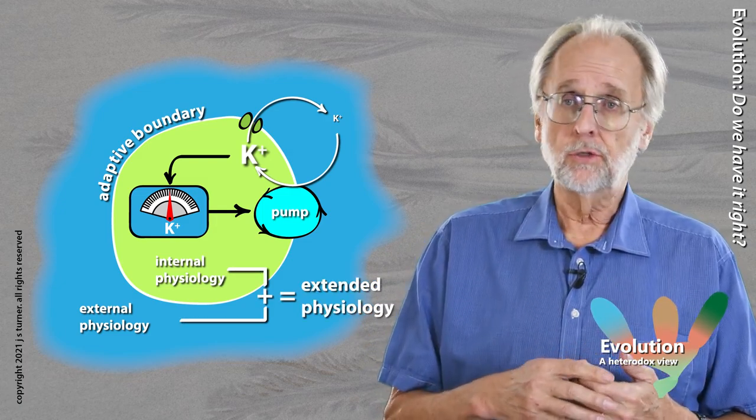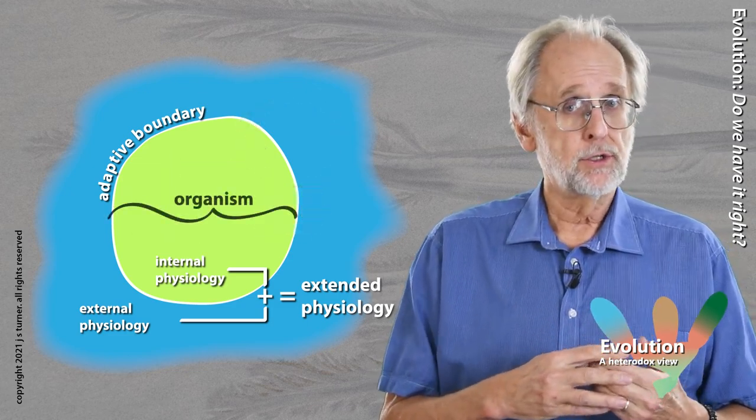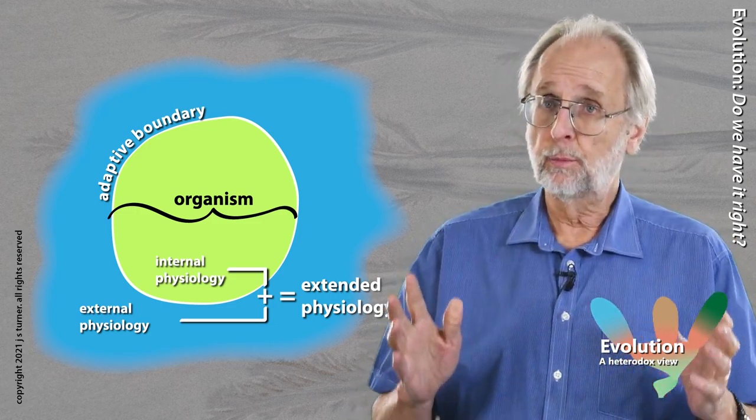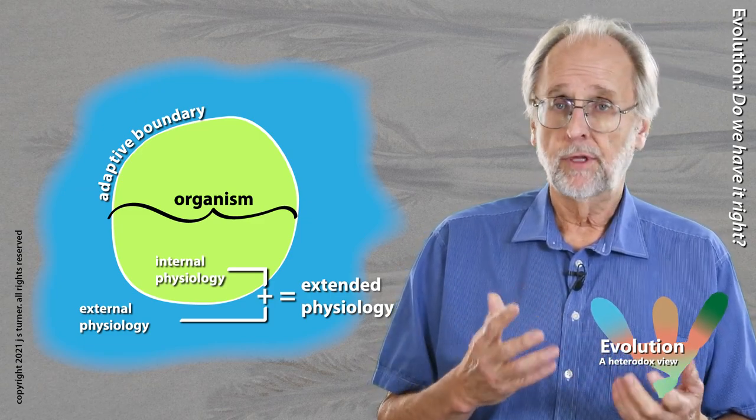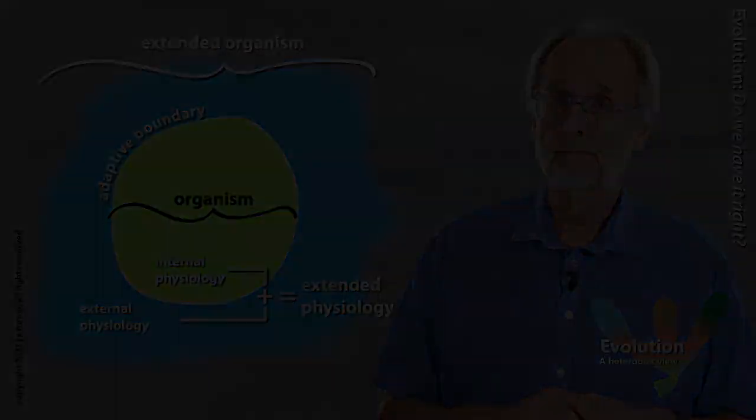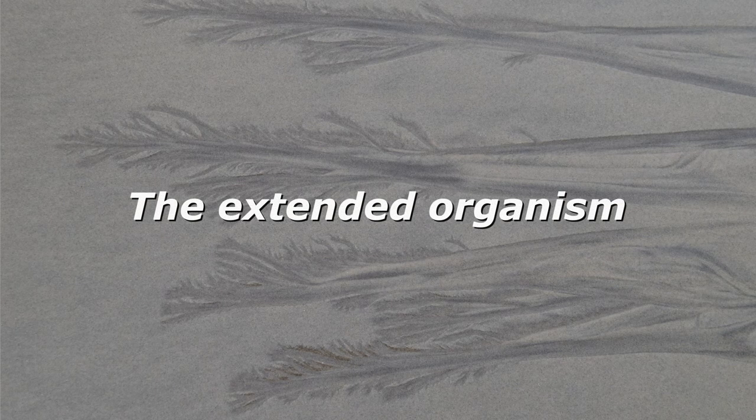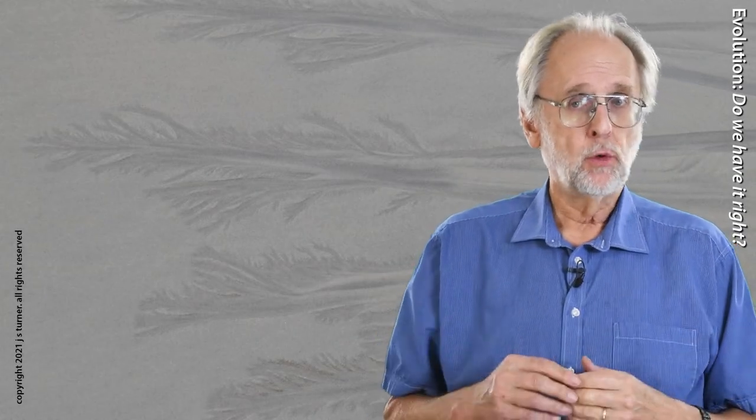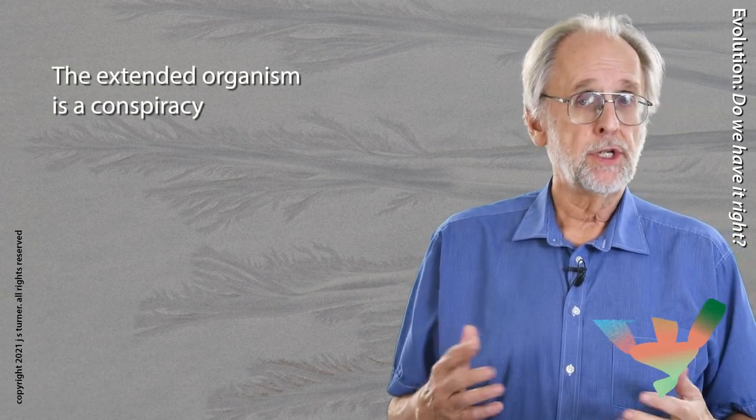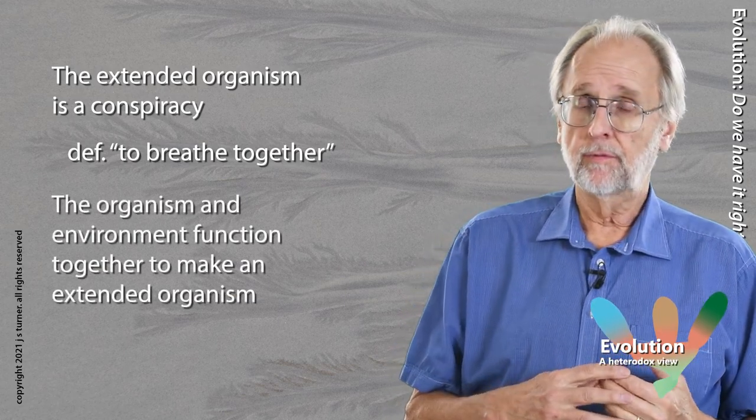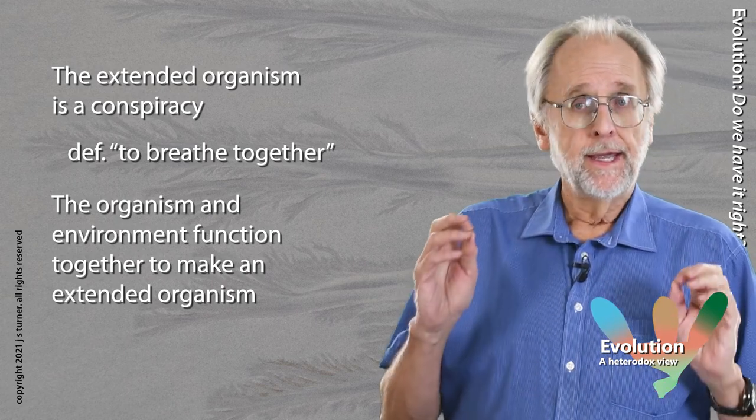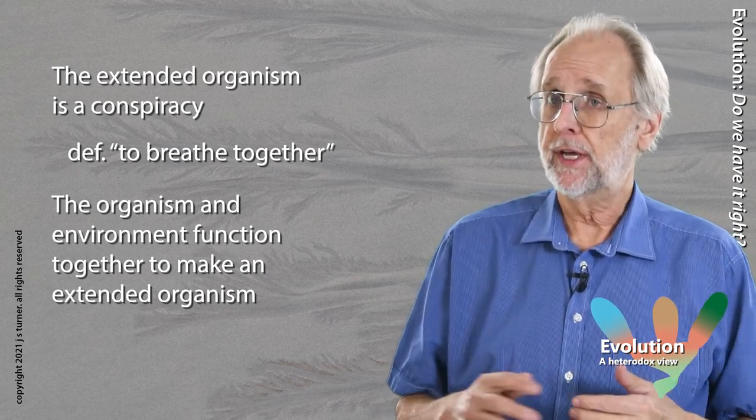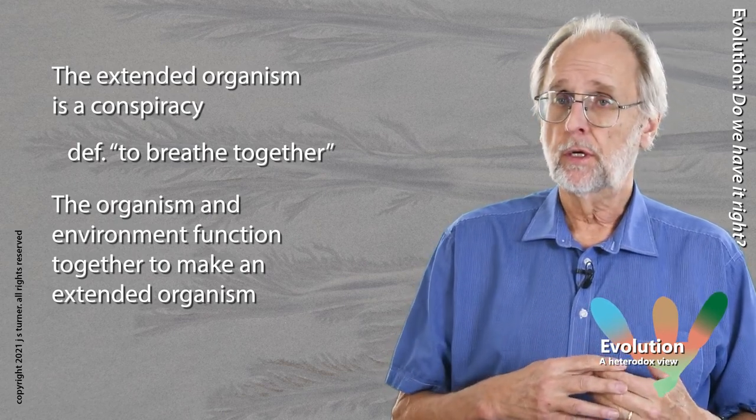And here's a weird conclusion that follows from that logic. If the cell qualifies as an organism based upon it being contained within an adaptive boundary, and if the cell's physiology extends to both sides of the adaptive boundary, the cell, the organism, is actually an extended organism. This extended organism is therefore a kind of conspiracy in the literal sense of the word as breathe together of environments on both sides of an adaptive boundary, internal and external. It's that conspiracy which resolves the question I just posed. Am I an organism or am I an assemblage of cellular organisms? Let's see how using the common earthworm as an example.